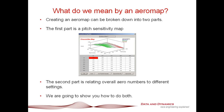Just so we're all on the same page: what do we mean by an aero map? An aero map can be broken down into two components. The first is the pitch sensitivity map — a plot of front and rear ride height versus downforce, drag, and aero balance, or in ChassisSim speak, CLA, CDA, and aero balance. The second part relates various hole numbers and aero configurations in terms of overall downforce levels. If you've got both, that's a complete aero map.